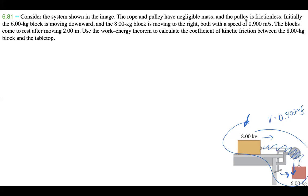Let's go ahead and write down our knowns. Mass one equals 8.00 kilograms, mass two is 6.00 kilograms, and the speed of the system, v_system, is 0.900 meters per second.